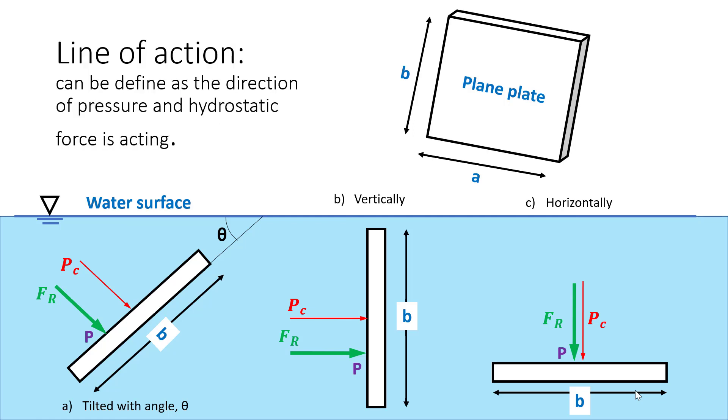Now let us look at line of action. Line of action can be defined as the direction of pressure or hydrostatic force acting to the plane surface. In the figure, we could see that the line of pressure is represented by the red arrow, while the line action of hydrostatic force is represented by the green arrow. We must remember that the line of action must always be perpendicular to the plane surface.